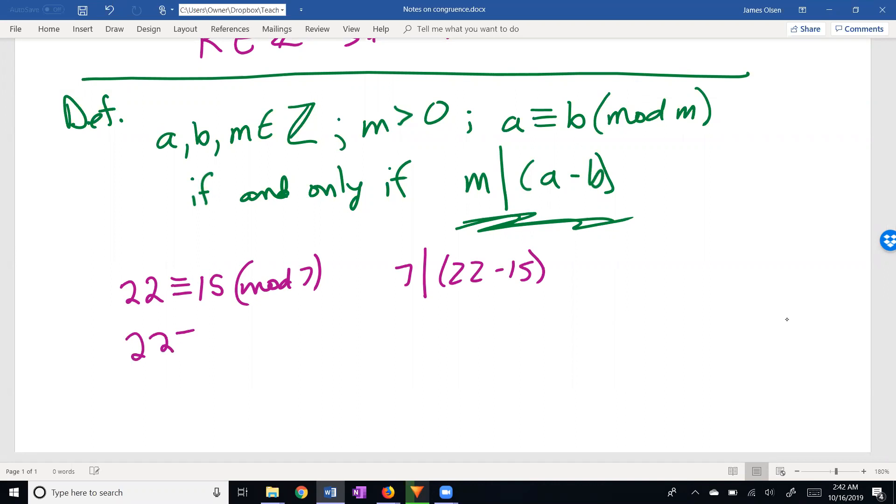22 is also congruent to 8 mod 7, because 7 divides 22 minus 8. Because 22 minus 8 is 14, 7 divides 14. Maybe you can see the pattern. What's my next statement?